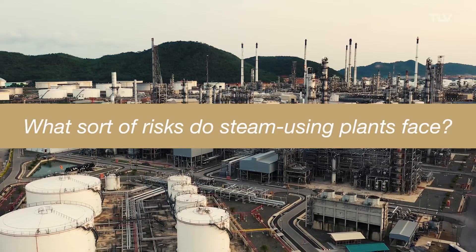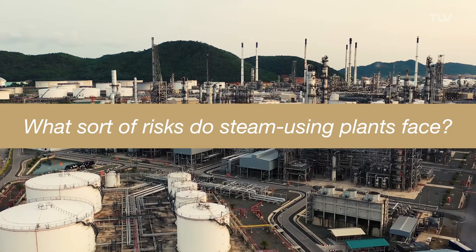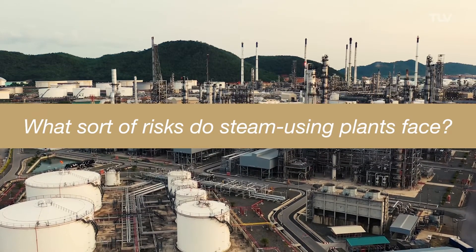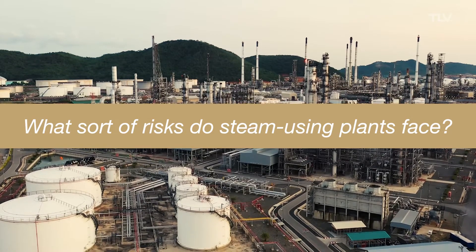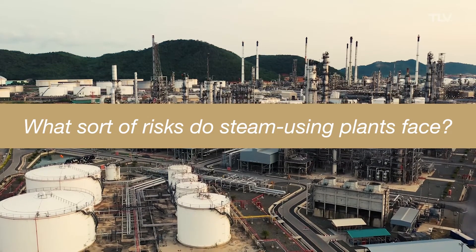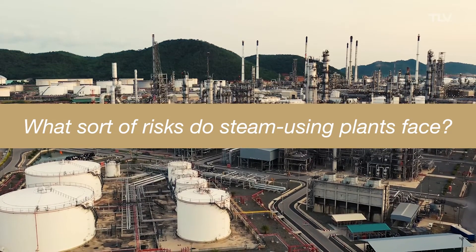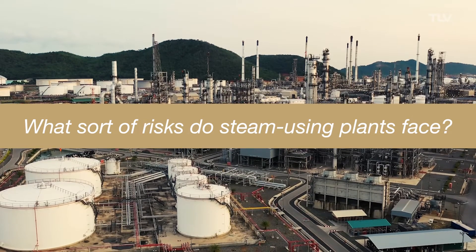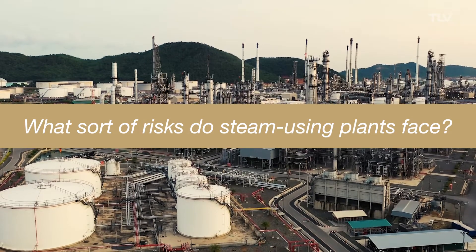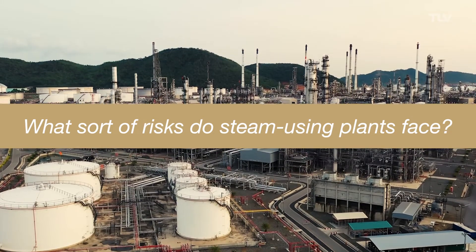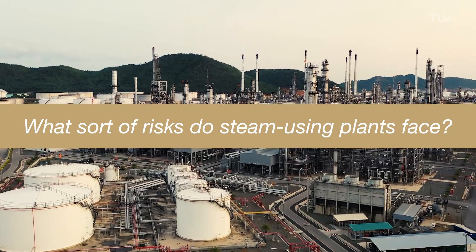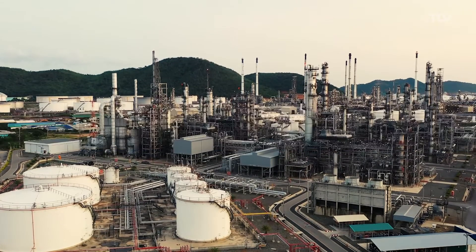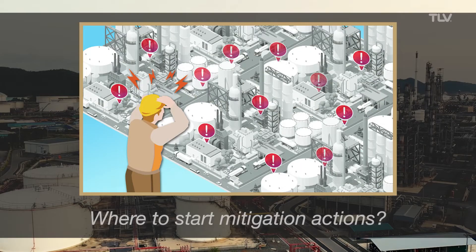Trouble can be prevented by identifying the plant's exposure to risk due to steam. Accurately identifying risk is the first step toward continuing the safe and reliable operation of the plant. However, in such a large plant, which particular area of risk should be addressed first?